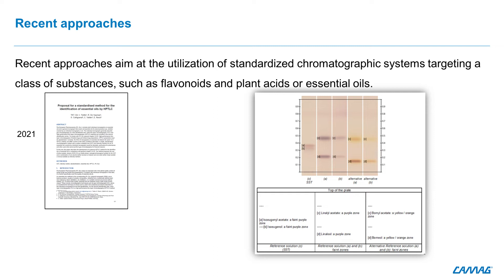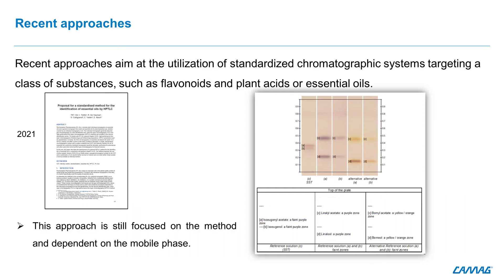A recent set of SSTs and specific markers were proposed for the analysis of essential oils. Because most of the essential oils are analyzed with the same developing solvent — toluene/ethyl acetate 95:5 — the SST consists of isoeugenol and isoeugenyl acetate. For the specific markers, two sets are developed: linalool and linalyl acetate for the violet zone, and borneol and borneyl acetate for the orange zone. Even if this approach is more general, it is still focused on the method and dependent on the developing solvent.